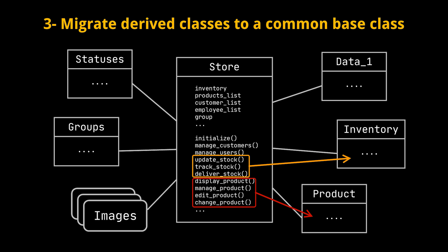The final step is to migrate derived classes to a common base class. In the example we have, we can argue that the inventory and the customers indeed belong to the store, but the products or items belong to the inventory as a first associative level.